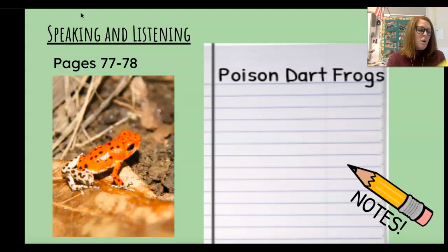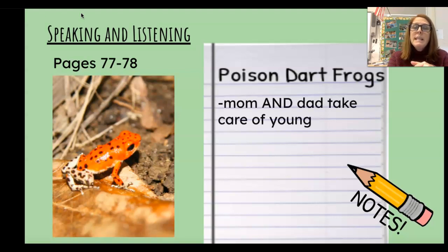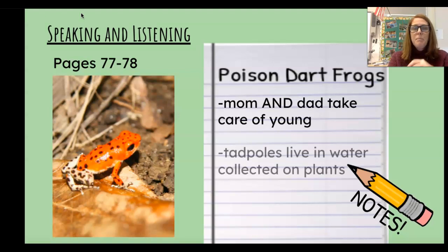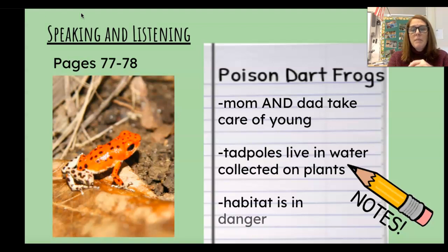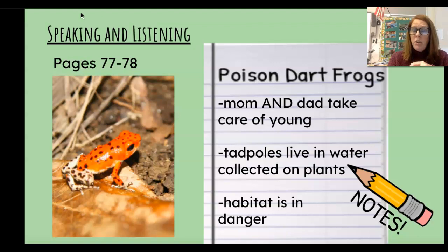And there's a picture of a strawberry poison dart frog. There were three main ideas on these pages. The first is that mom and dad both take care of the young — it's not just mom's job. The next is that tadpoles live in water collected on plants in the canopy. And last, their habitat is in danger. Go ahead and write down those facts on your paper. You will be submitting your paper to me so I can check and make sure you have all the information you need. Thank you.